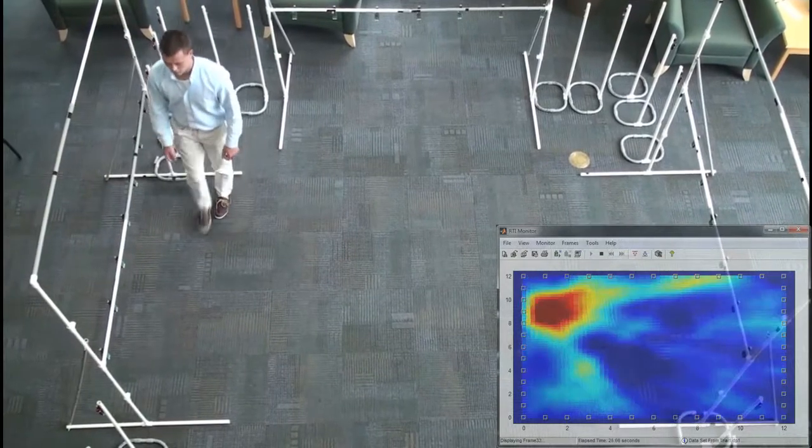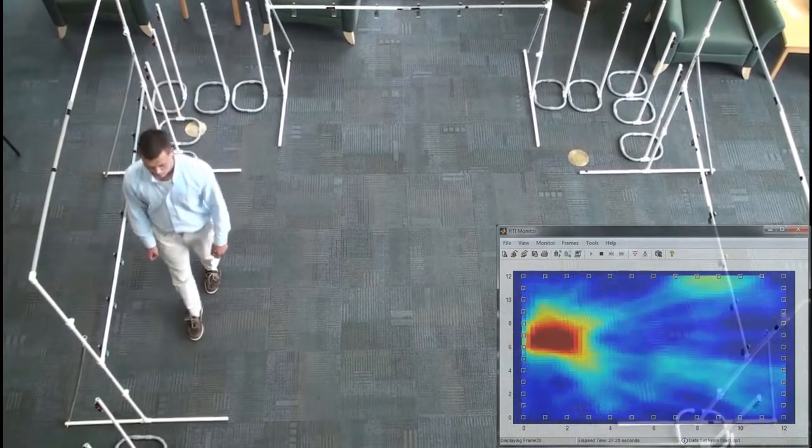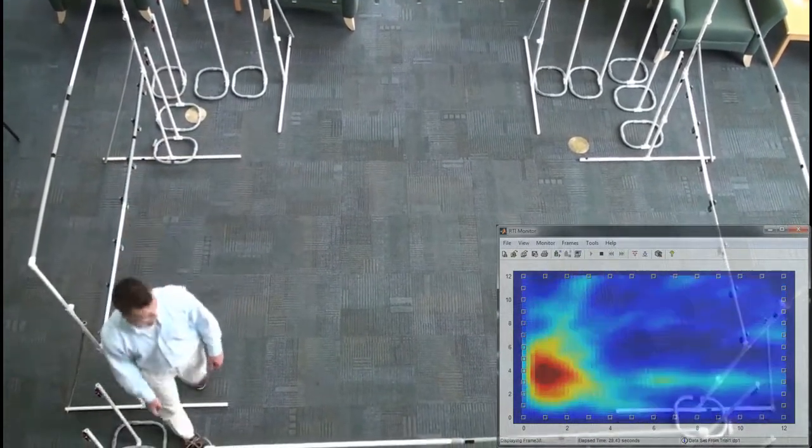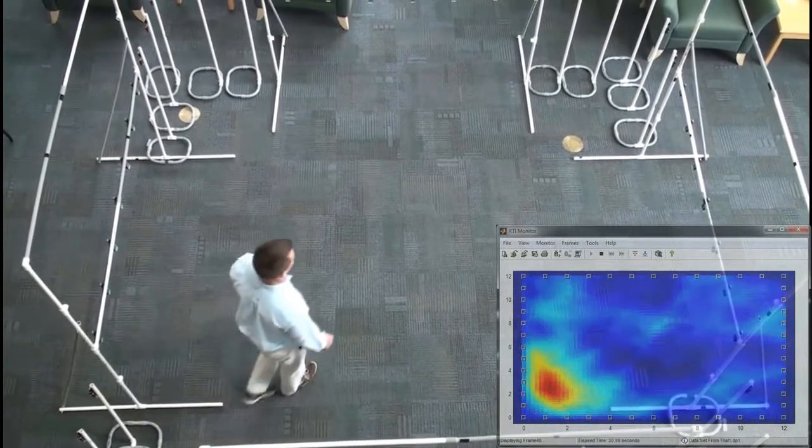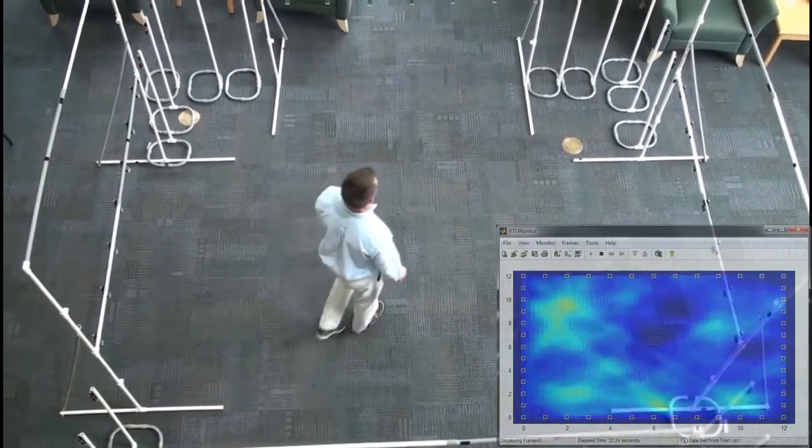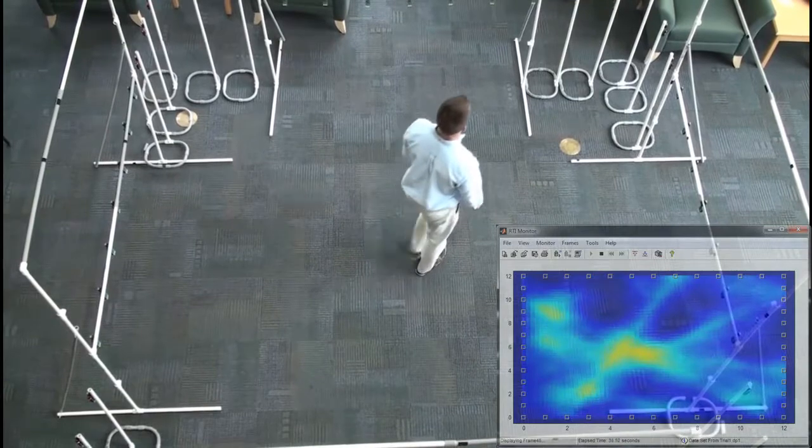As a person crosses the various radio links, he blocks their line of sight, and his body absorbs a portion of the radio energy. This is detectable at each receiver, so the radio links act like a dense network of radio tripwires.